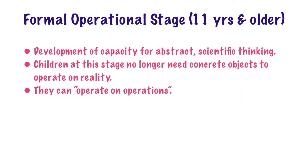Having watched the video clips, we now understand that formal operational stage involves thinking in abstractions rather than through tangible or concrete objects. It involves a development of capacity for abstractions — thinking with the help of ideas rather than concrete objects. Children at this stage do not need tangible objects to perform operations, unlike a concrete operational child who needs tangible objects to learn concepts such as addition and subtraction. A child in the formal operational stage is able to perform those operations mentally.